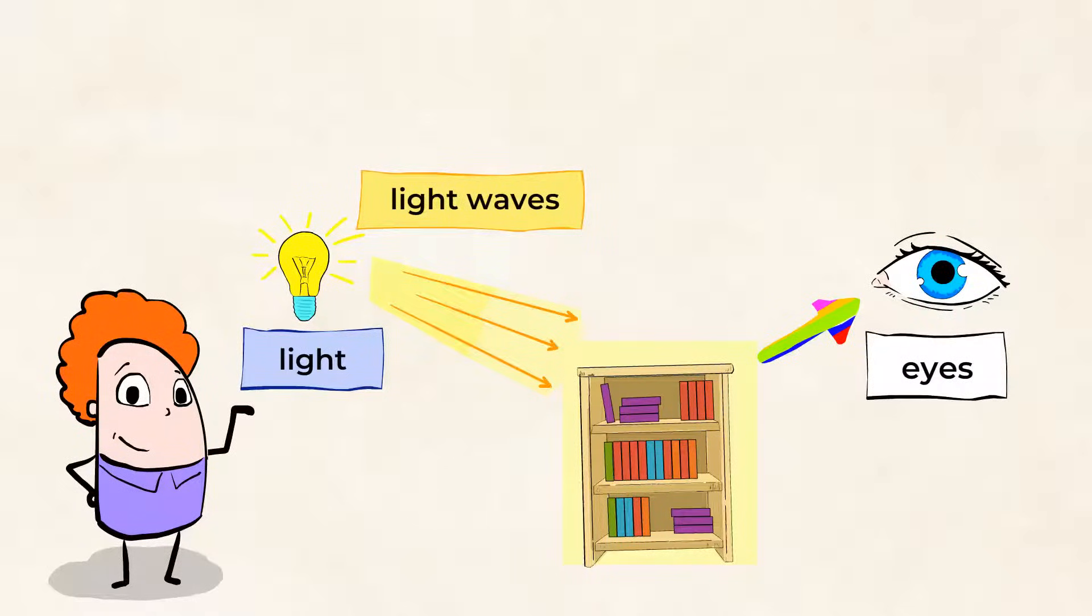This is how we actually see. Light appears from a light source, it reflects off of objects around us, and enters our eyes.